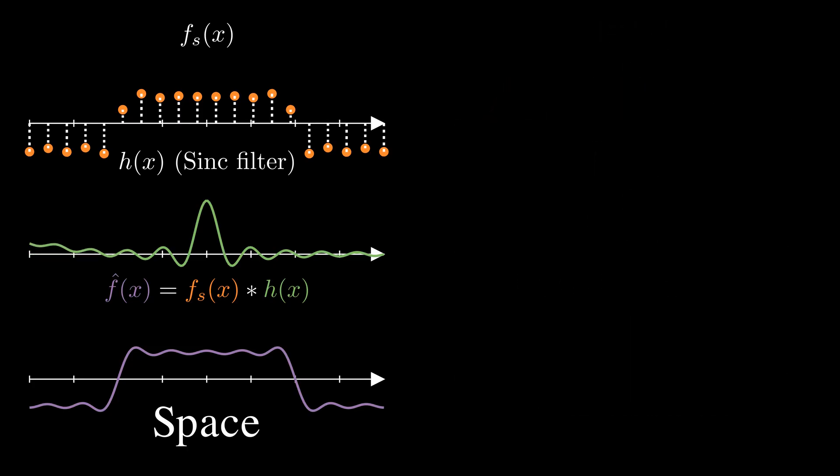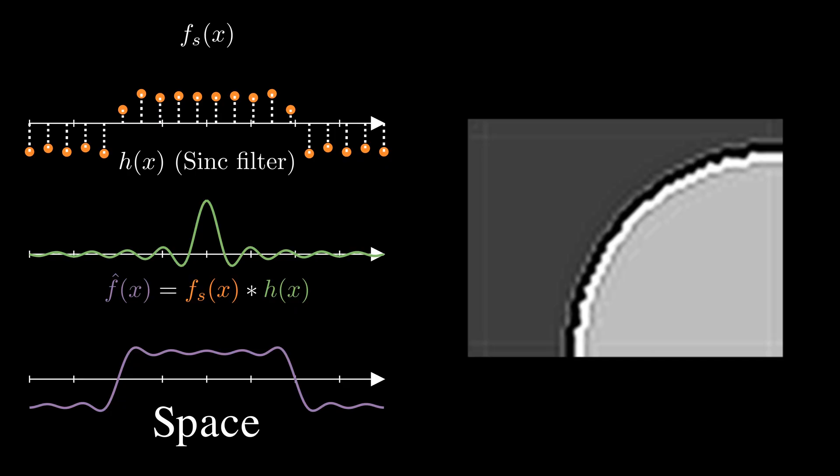But there are two drawbacks. The sinc function extends infinitely, so computing it exactly is impractical. Second, sinc filters create ripples near sharp transitions. These are called ringing artifacts.